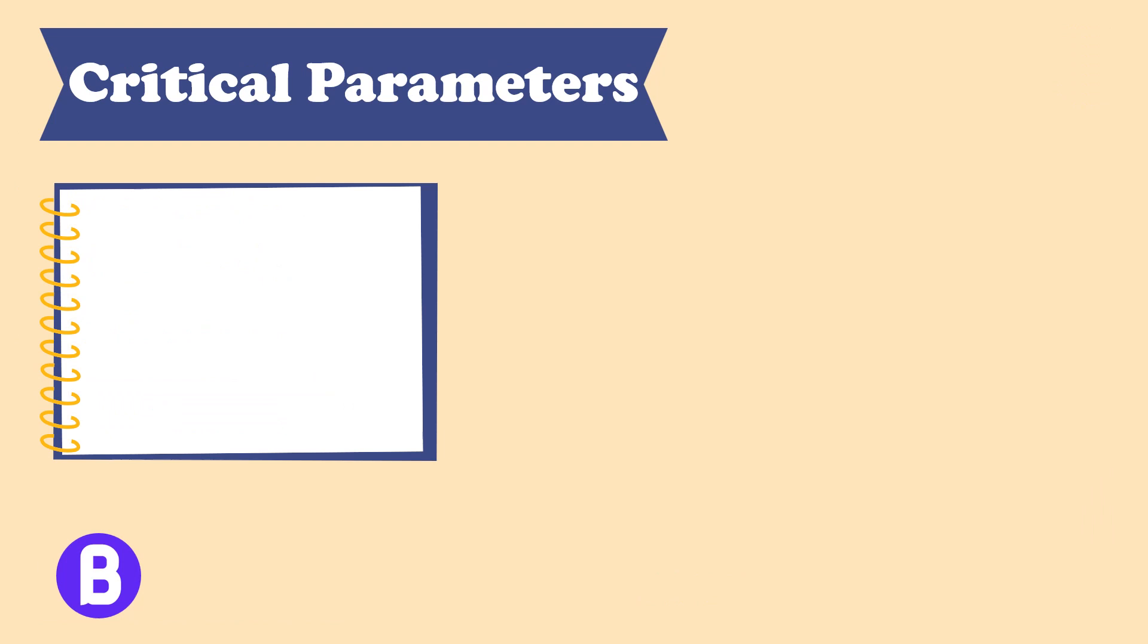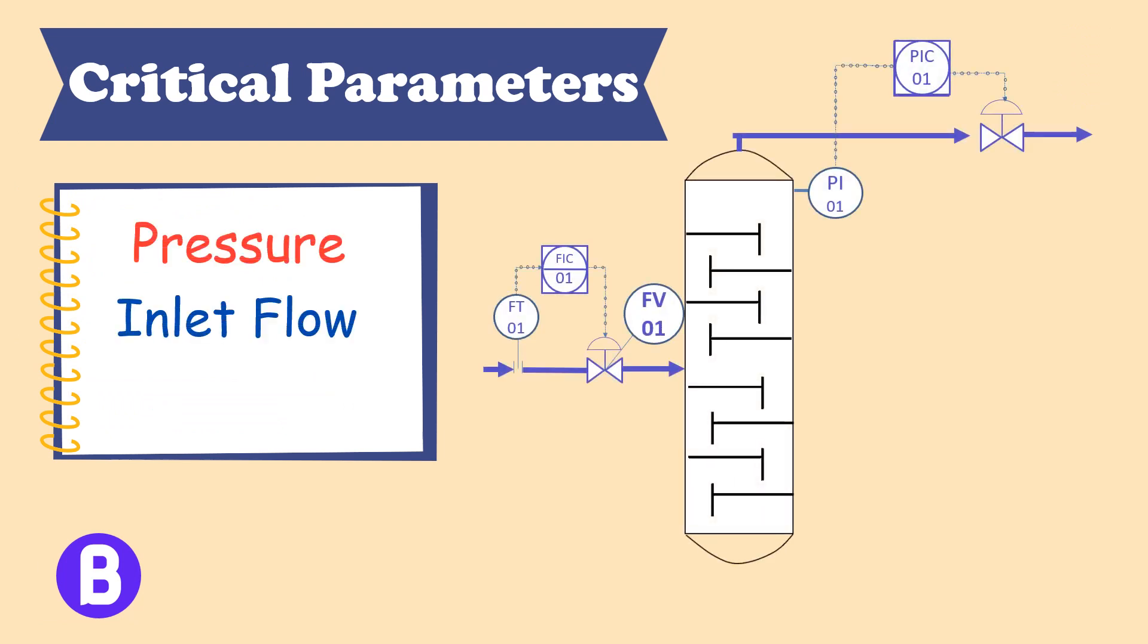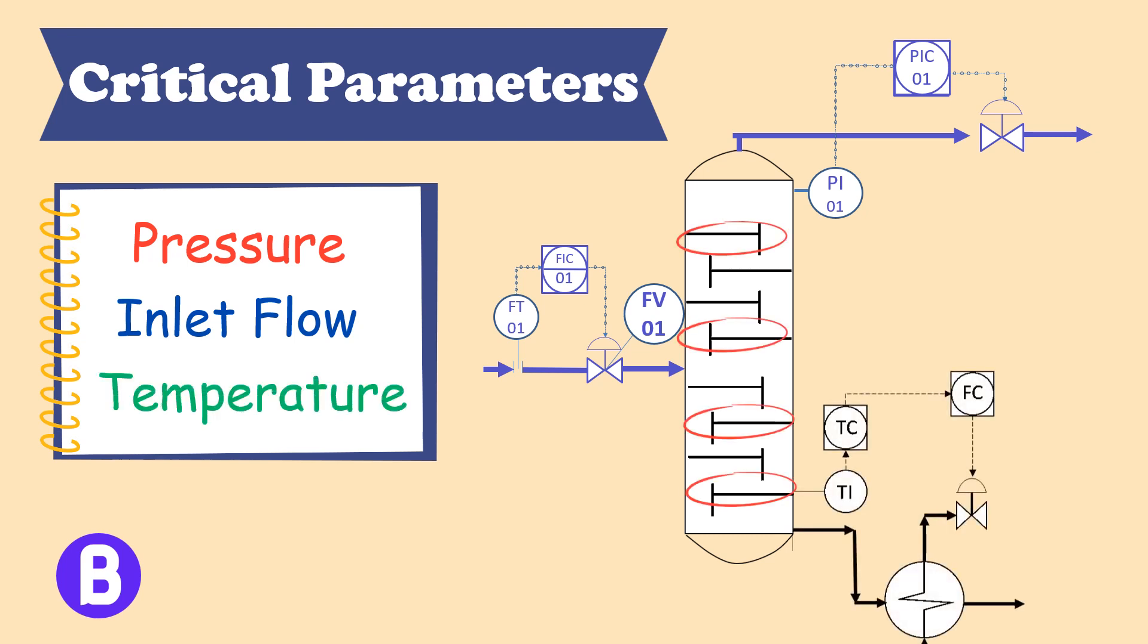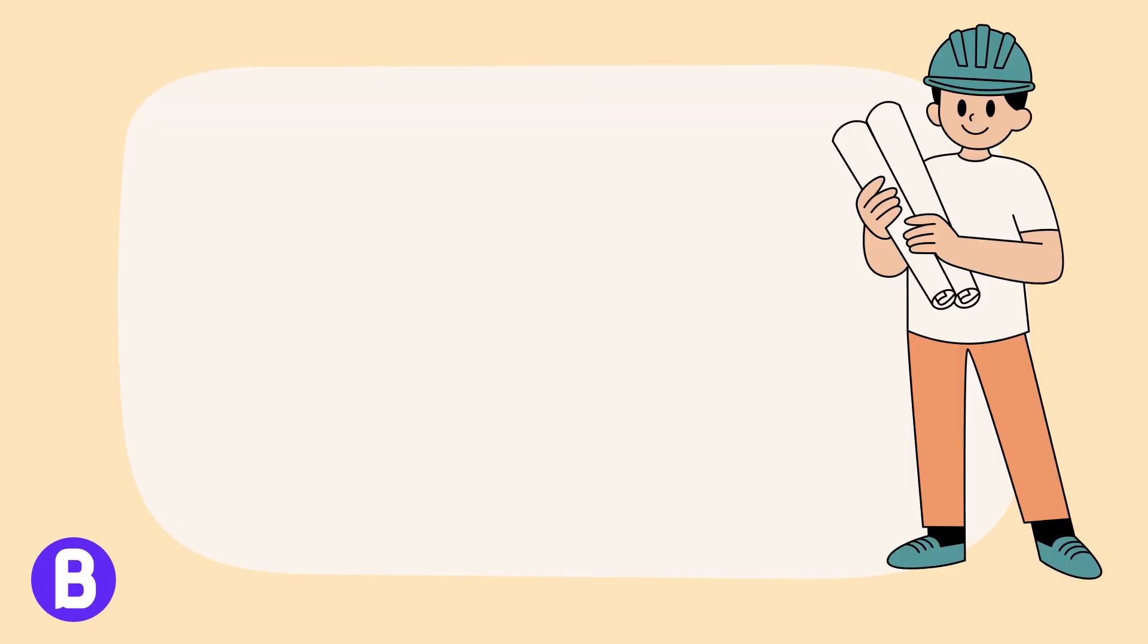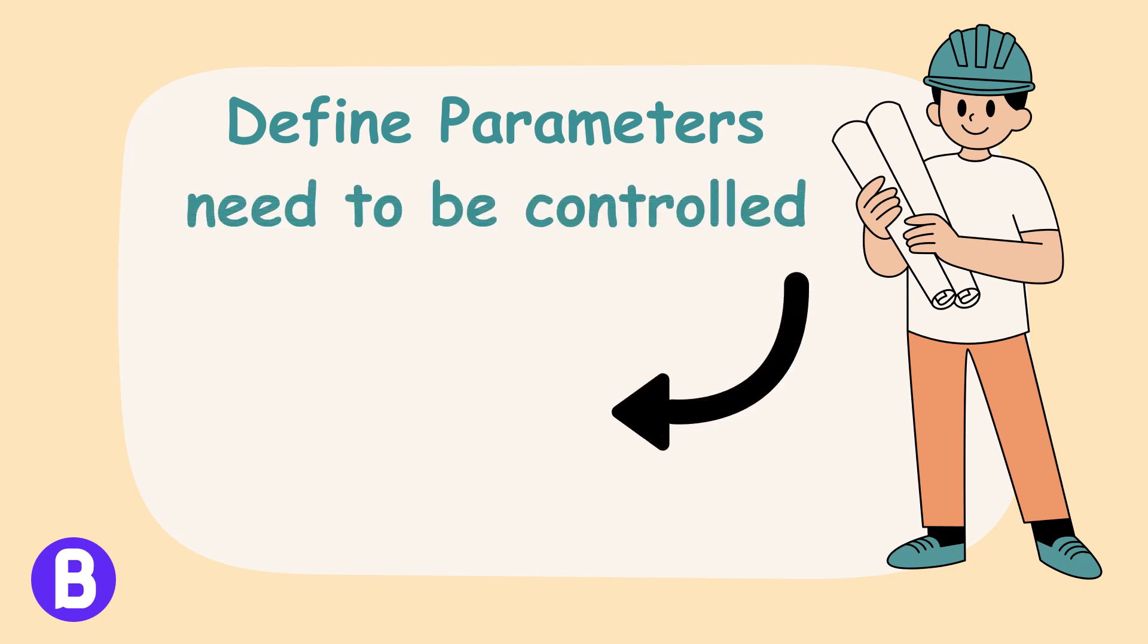For a tower, we need to control its pressure and the inlet flow. We can also be controlling the temperature of specific trays as these are among the most important factors affecting the tower operation. So it's important here to define the parameter that will most affect the performance of the system we want to control in order to choose the control scheme that fits our purpose.